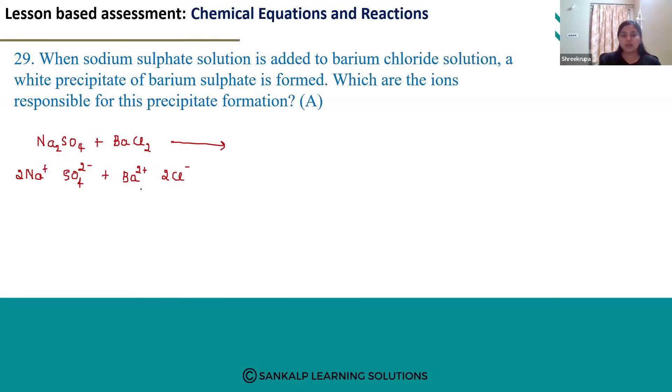Exchange of ions will take place here. Barium ion and sulphate ion combine to form BaSO₄, barium sulphate. Sodium and chloride ions combine to form 2 NaCl.